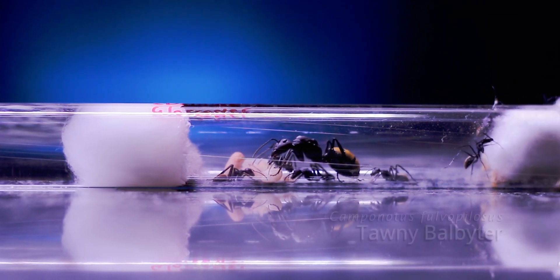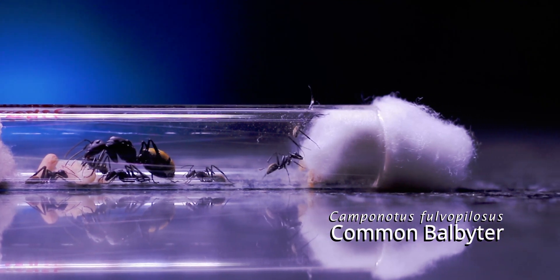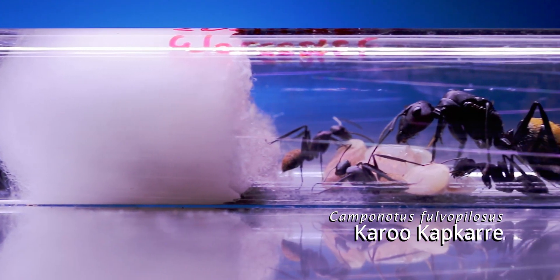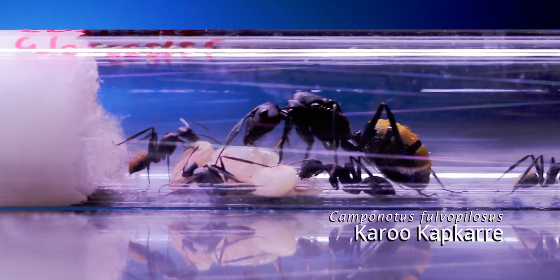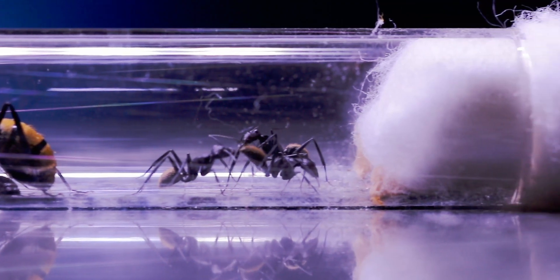This is Camponotus flavobrillosis and they're commonly known as the Tawny, Common or Karoo Balbeiters or Kapkarre. Both their common names of the group Balbeiters and Kapkarre indicate their size and aggression.